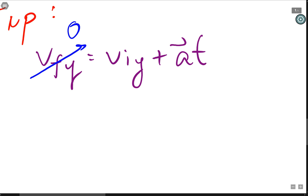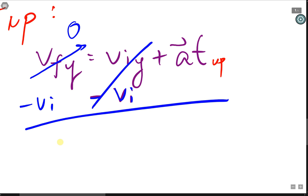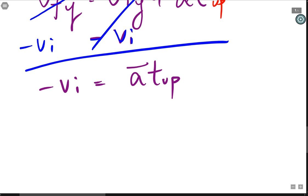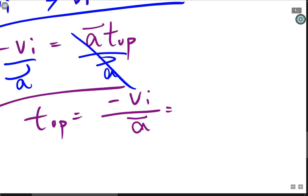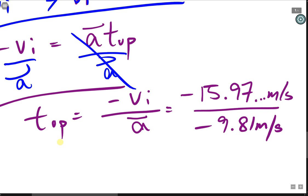The final vertical velocity here is zero, so we can take that away. And isolating for t, and I'm going to write t up. We're going to isolate for t up. We're going to subtract both sides of the equation with viy, and this leaves us with negative viy equals to a t up. Dividing both sides by a, we get t up is equal to negative viy divided by a. Substituting our values in, we have negative 15.97 meters per second, divided by negative 9.81 meters per second squared.